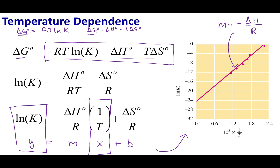If this were an endothermic reaction, the plot would have the opposite sign for its slope. Another thing we can see is the intercept, which equals delta S over R. So if you've ever wondered how they calculate entropy, or the chaos of a system, you can determine it from this reciprocal plot.